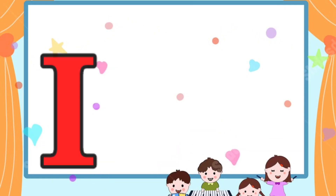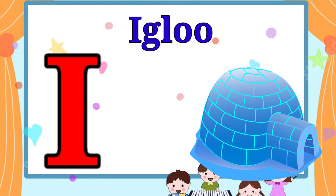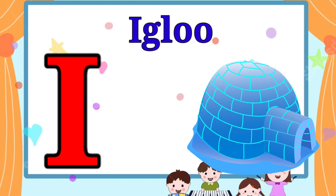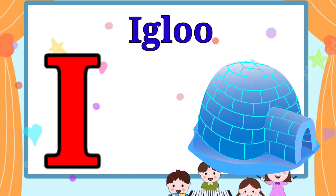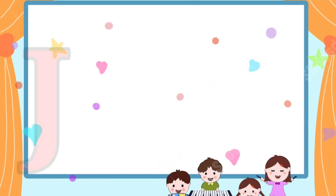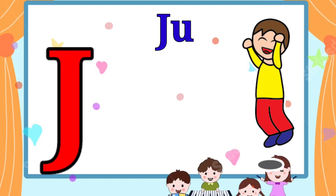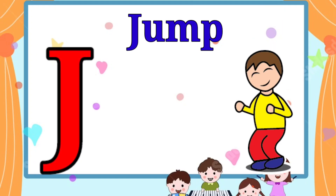I is for igloo, i-i-igloo. J is for jump, j-j-jump.